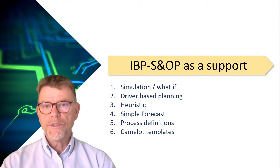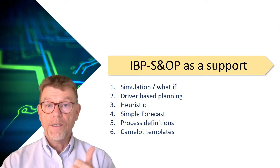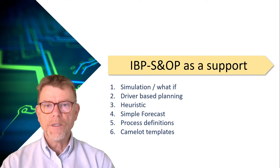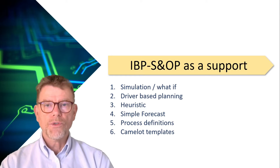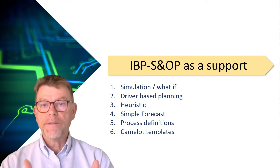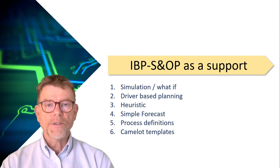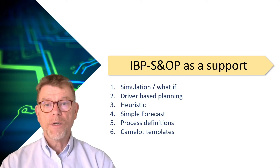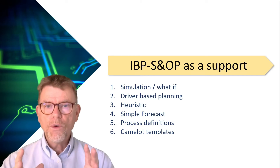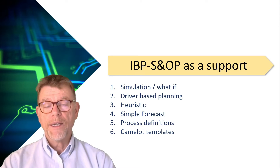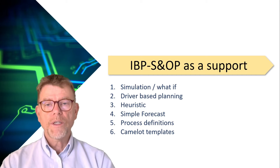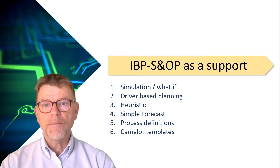Heuristics: in SNOP you have only heuristics without shortage. Then simple forecast — because in SNOP you don't need to run an actual forecast, as that's done in demand planning. But sometimes in SNOP you need to extrapolate data calculated for the next 18 months out to 60 months, for instance — so a simple forecast for that kind of extension is useful. Process definition: SNOP brings you process definitions — kind of workflows, but not constraining ones — proposed by the SNOP module. We'll also visit the CAMELOT templates as proposed in our predefined solution, the so-called SCMLab.